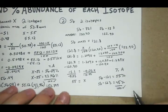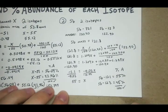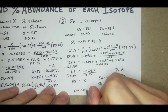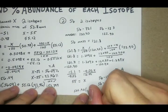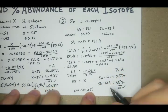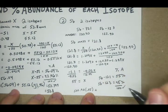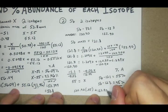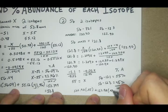So 120.90 times 0.55, this time we have a nice round number, so that's easy, plus 122.90 times 0.45.